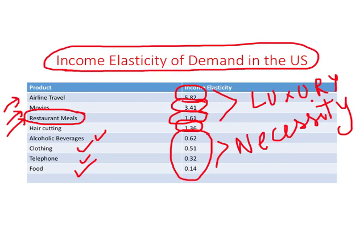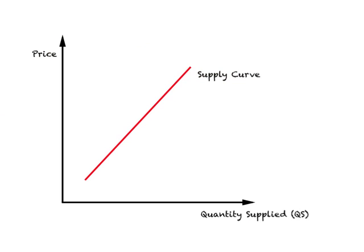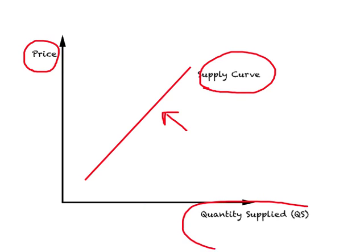Next we look at elasticity of supply. In a supply curve diagram, the law of supply tells us the supply curve will be upward sloping, reflecting a positive relationship — as price increases, quantity supplied increases as well.